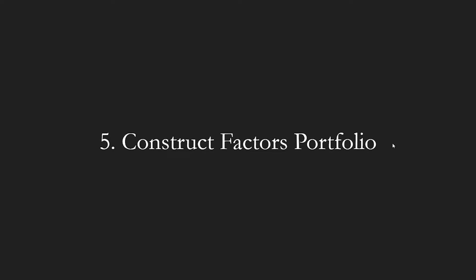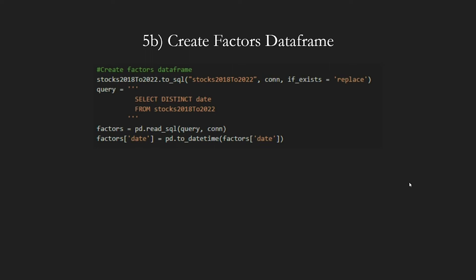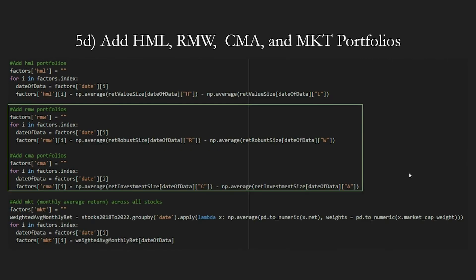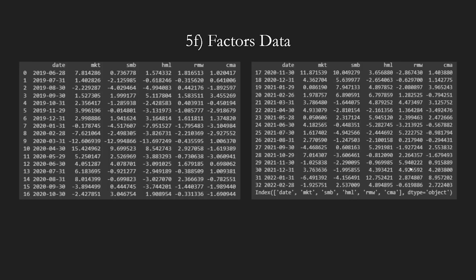Next, we construct the factors portfolio. This block is largely modified, so we will go over the entire code. First, we calculate the average weighted returns the same way as the three-factor model, but now we have six different group-by variables with different indexing. We then create the factors data frame to store our results, unchanged from the three-factor model. We add the SMB values — since we have three different ways of dividing small and big firms into three portfolios, we use all three and take the average for more precise SMB values. We then add the other four portfolios: HML and MKT remain unchanged, while the new RMW and CMA follow the same pattern as HML. Finally, we clean the data frame, selecting the two new factors. This is our expected output.